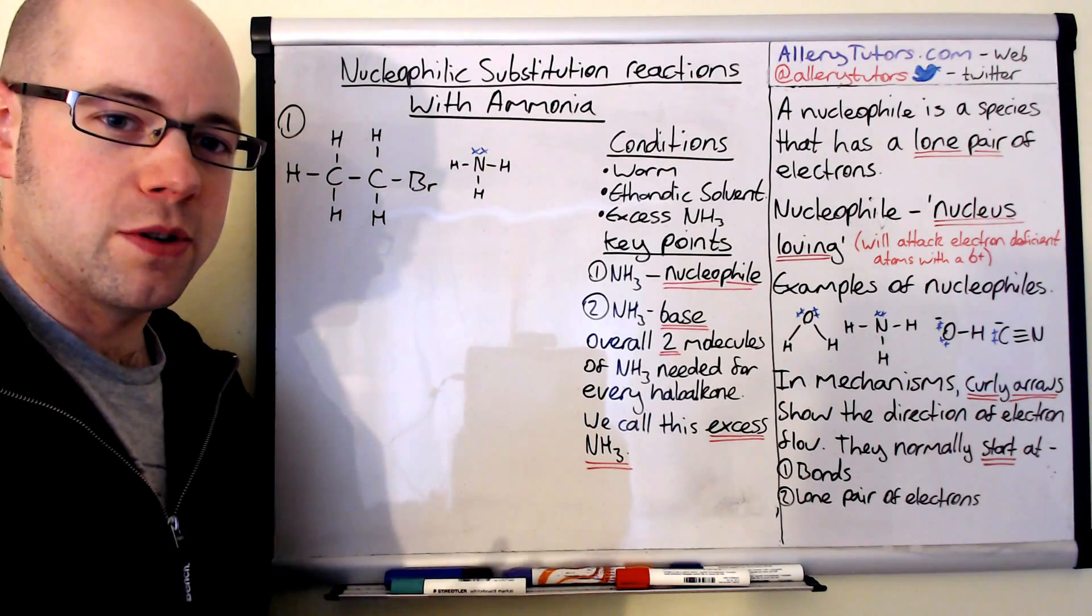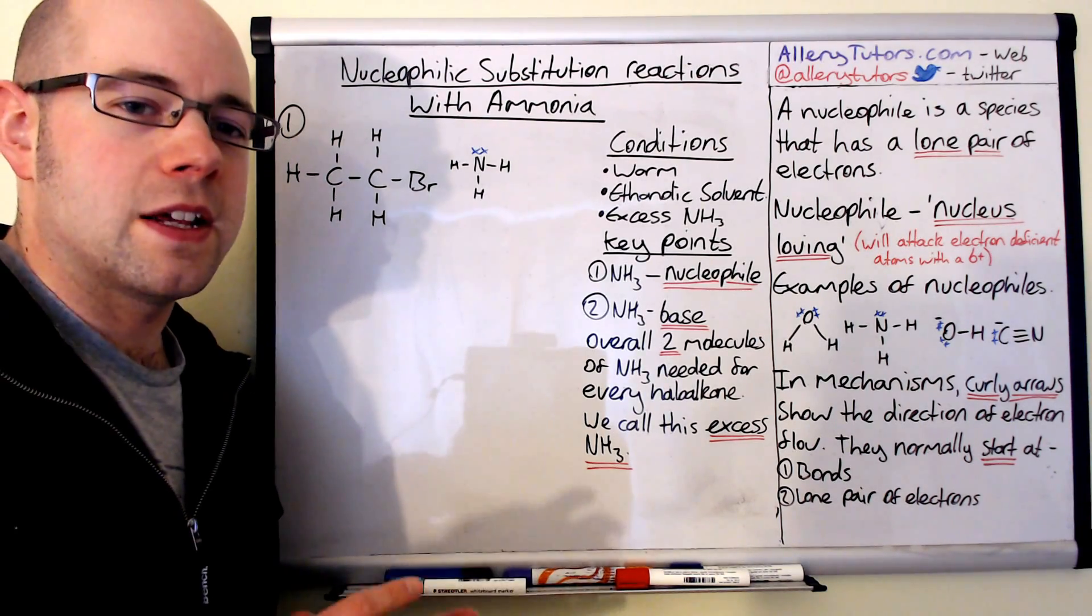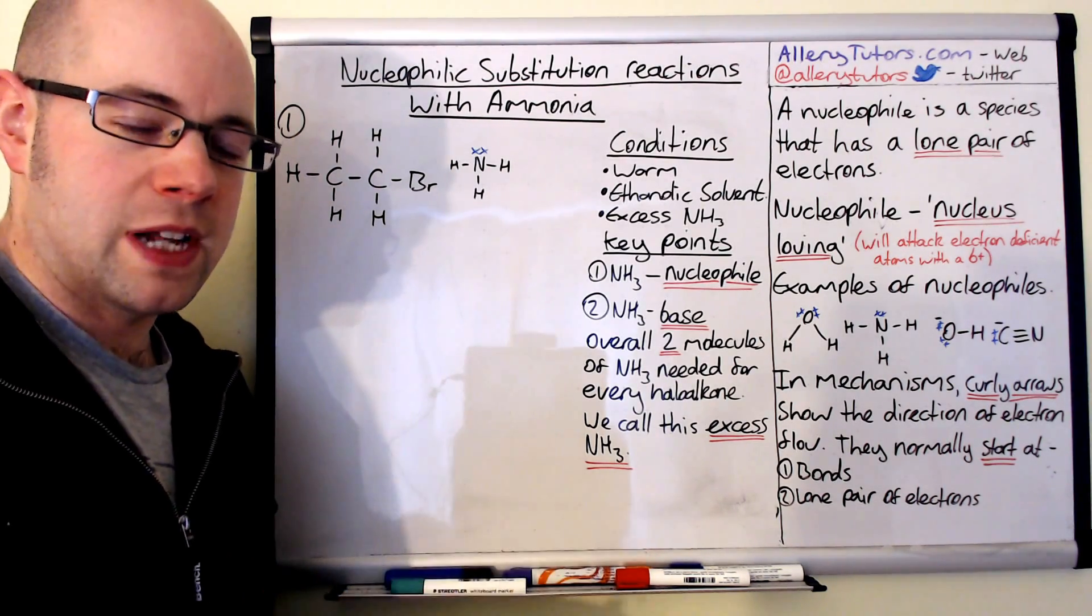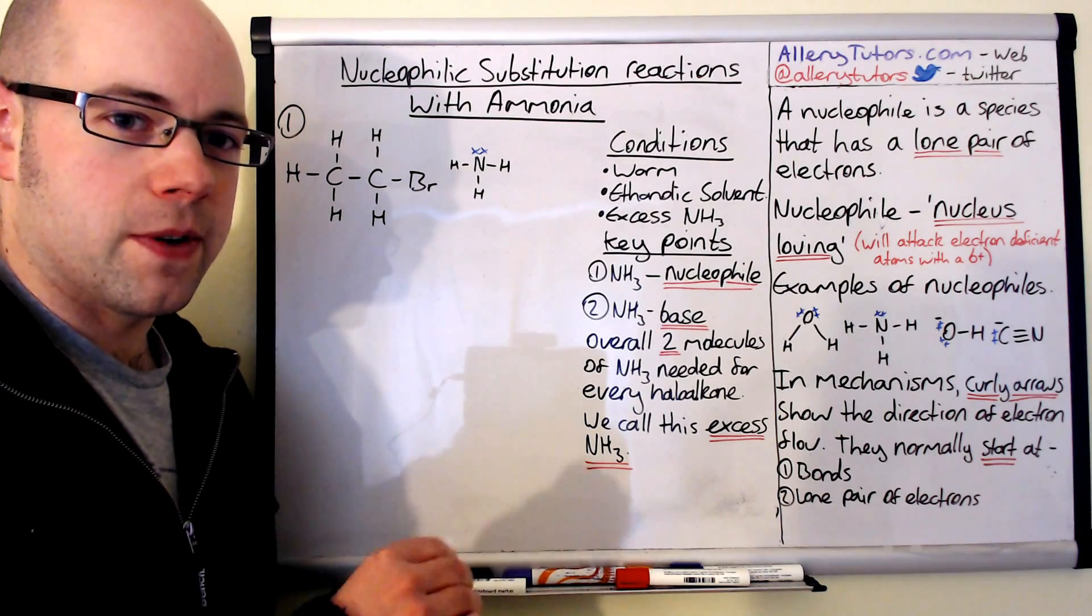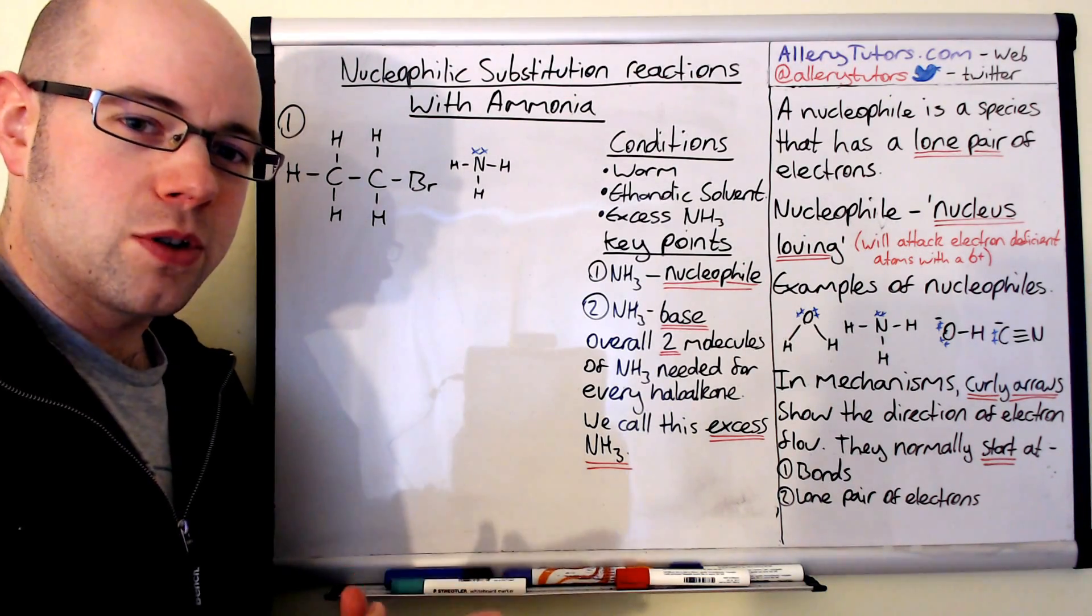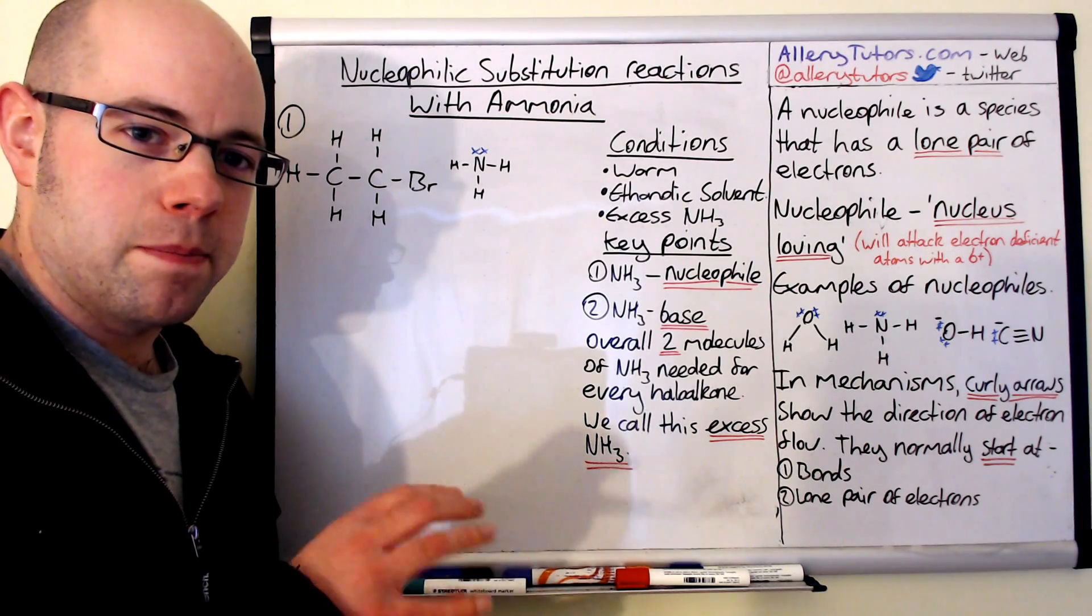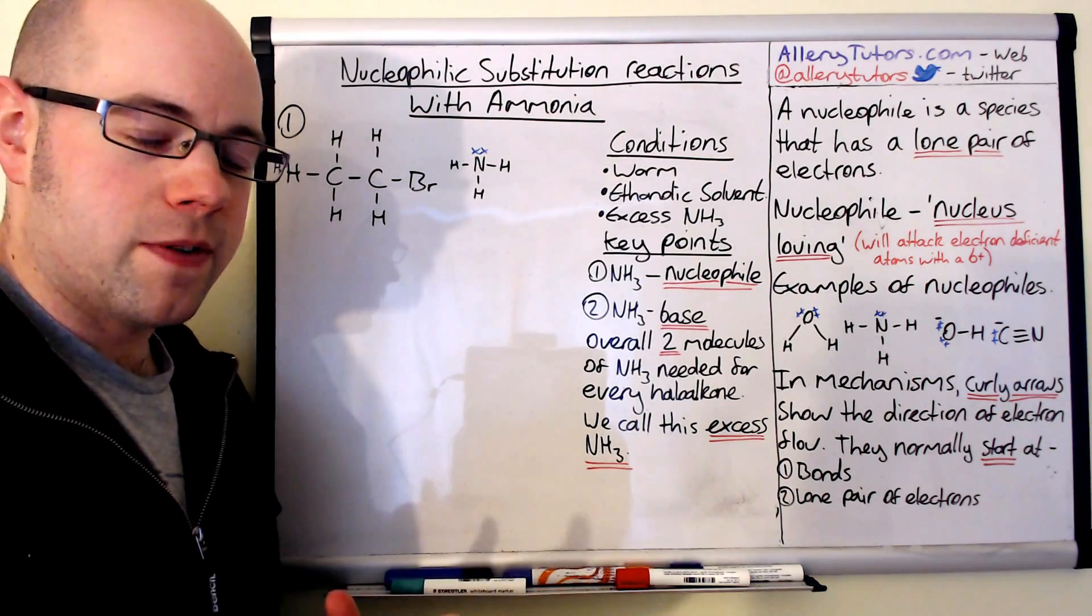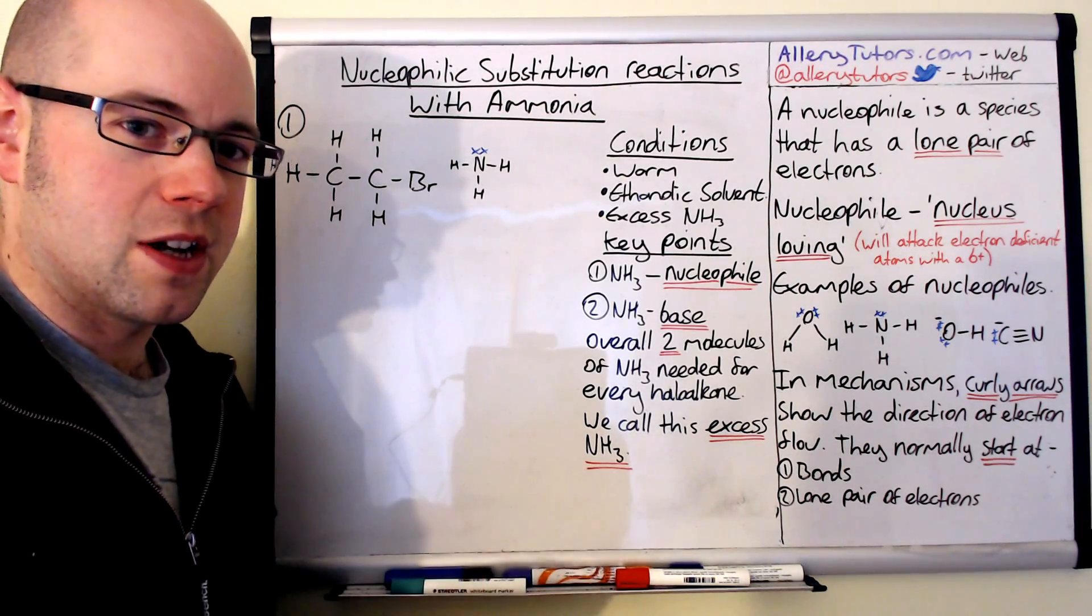I'm going to start with just saying what a nucleophile is. Now a nucleophile is a species with a lone pair of electrons and the word nucleophile means nucleus loving. So this is a species that will go for a part of a molecule that is electron deficient, for example a delta positive area.